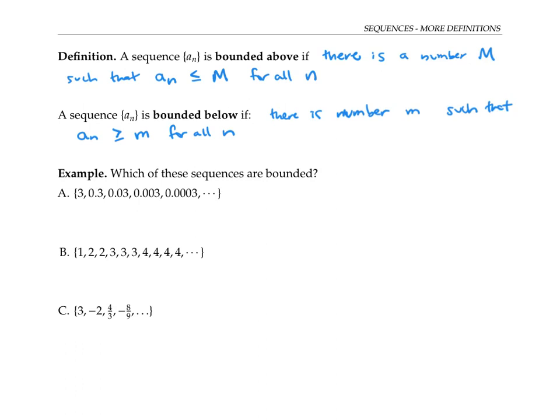We say that a sequence is bounded if it's bounded both above and below. In other words, all of its terms are trapped between two numbers.